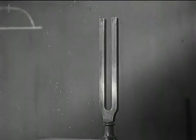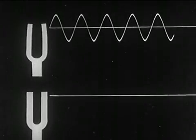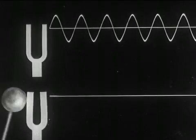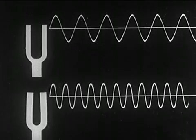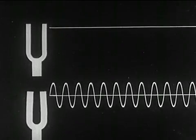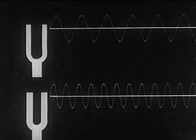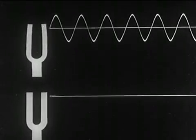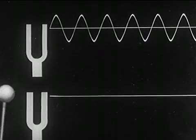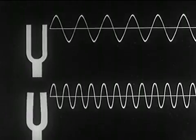What causes such differences in pitch? To explain such differences, we picture two different sound waves. The lower fork makes more complete vibrations per second; therefore, its frequency is greater. It is evident that the one with the greater frequency has the higher pitch.